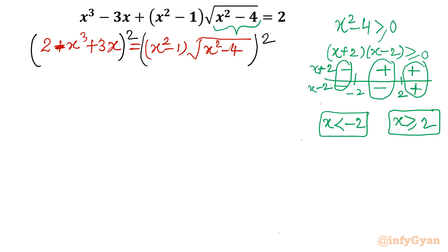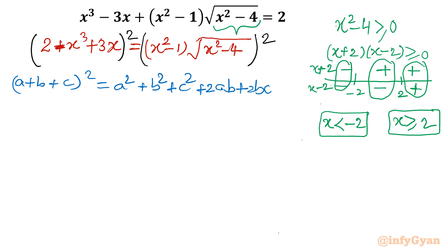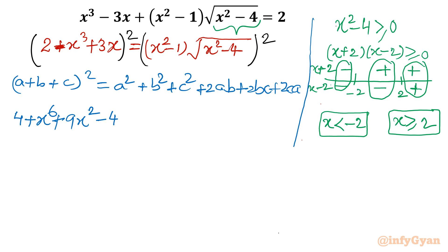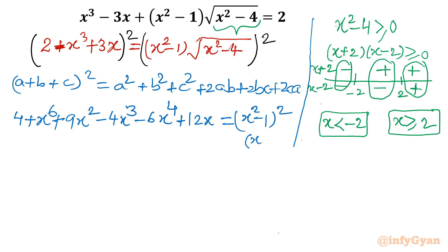Once I consider squaring both sides, let us write the formula for (a + b + c)² = a² + b² + c² + 2ab + 2bc + 2ca. Applying here: a² = 4, b² = x⁶, c² = 9x². Now twice ab gives -4x³. Twice bc gives -6x⁴. Twice ca gives 12x. The right-hand side will be (x² - 1)² times (x² - 4).